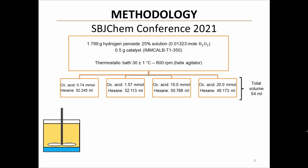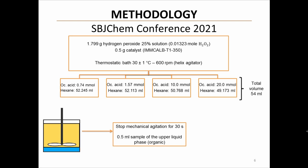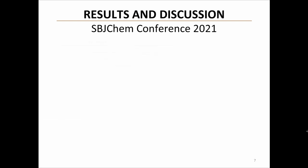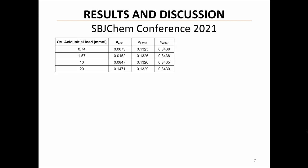The sampling procedure consisted in stopping the agitation for 30 seconds to allow the liquid phases to fully separate. Then, 0.5 ml of the organic phase were sampled and the content of peroctanoic acid was quantified by iodometric titration. For each initial load of octanoic acid, the initial thermodynamic activities of the substrates were estimated with UNIFAC.